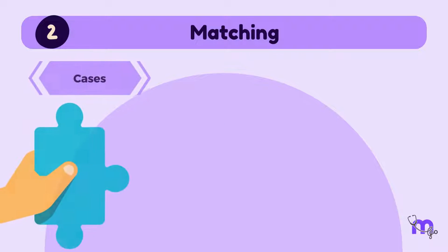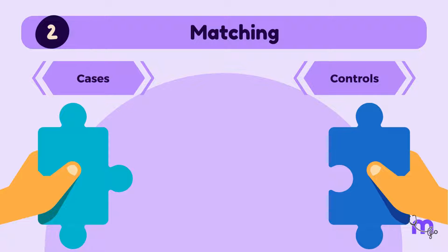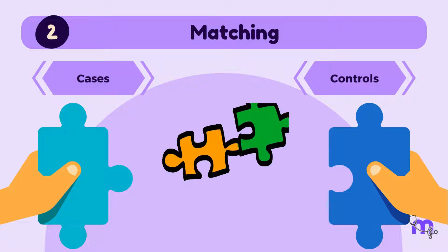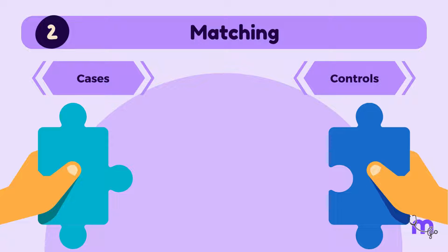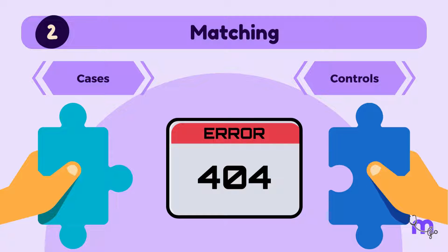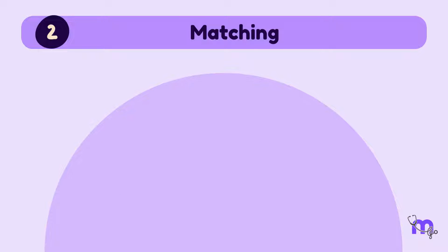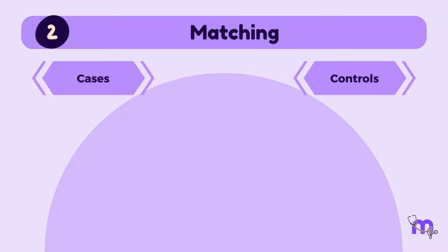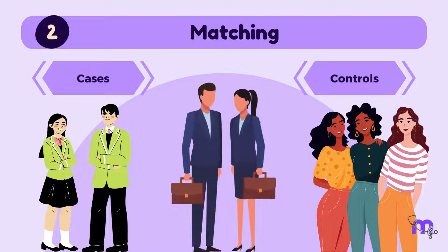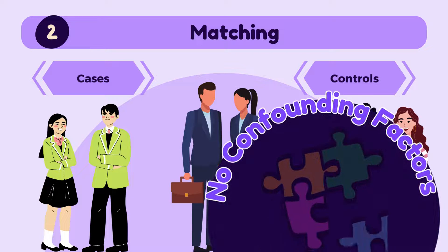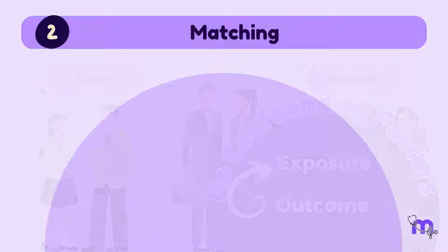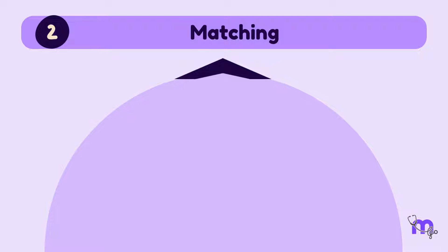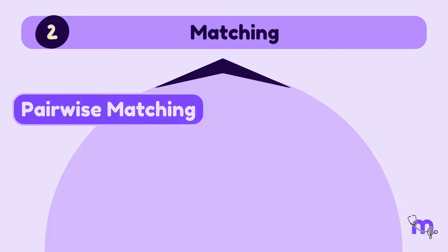My second step is to match my cases and controls. Matching refers to choosing the cases and controls simultaneously. If not sufficiently matched, there could be errors in my results. For example, matching cases and controls of the same age, sex, and occupation ensures no confounding factors between the exposure and outcome of my study. Matching is of two types: pairwise matching and group matching.